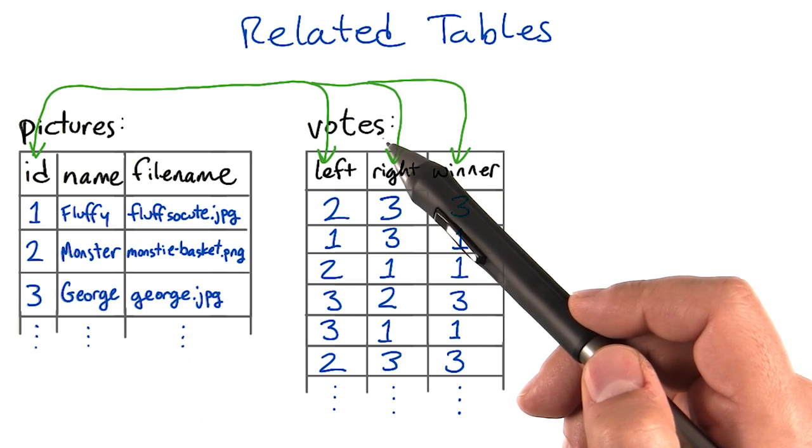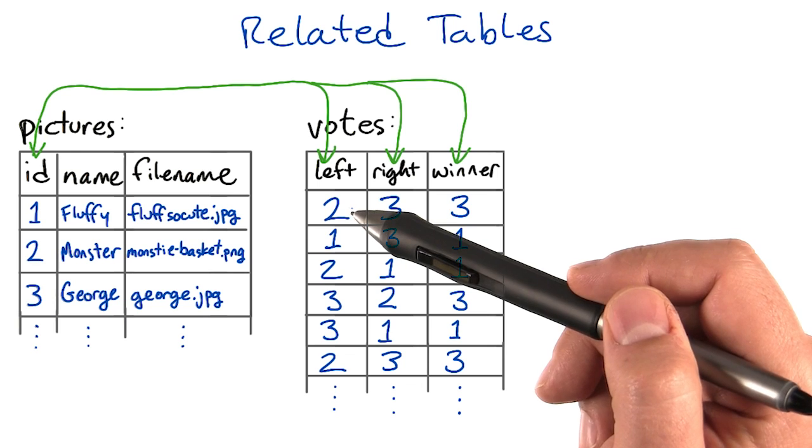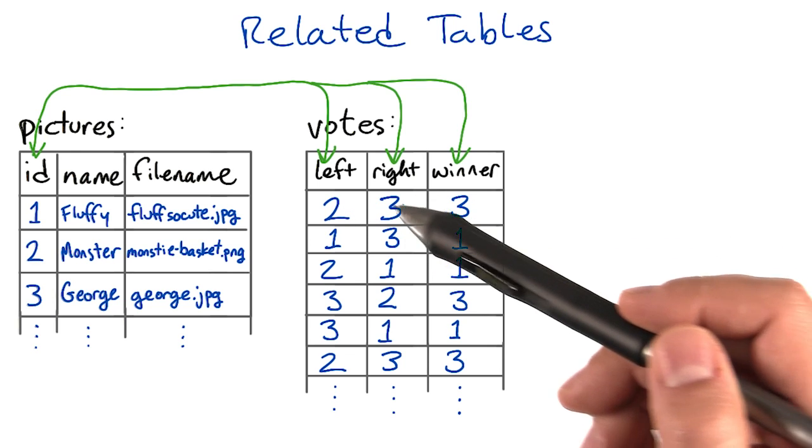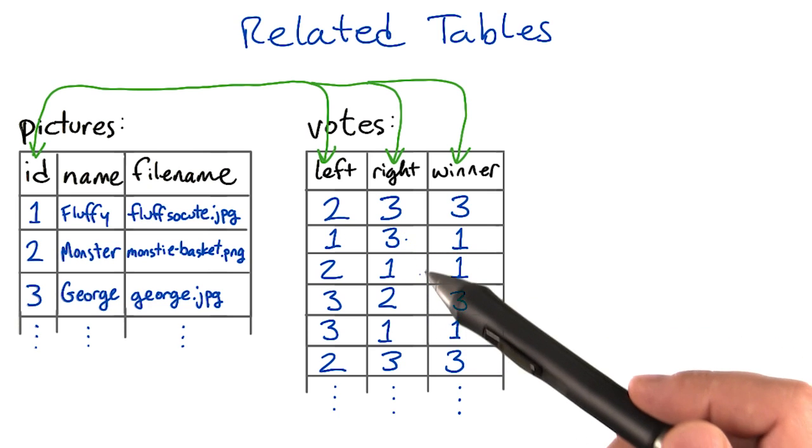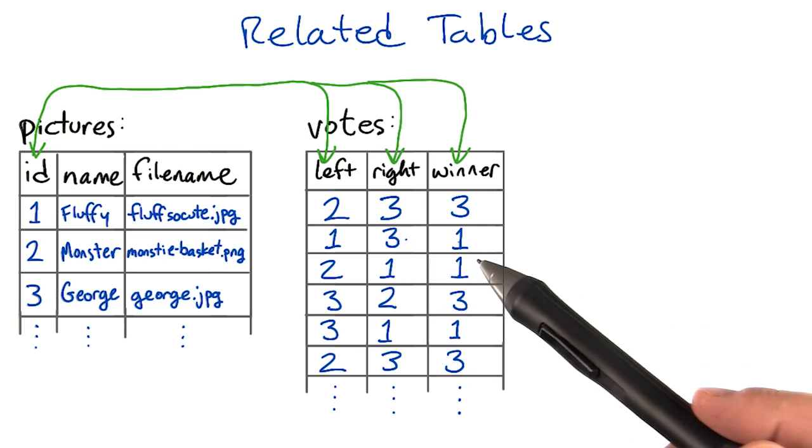In the votes table, the sentences are Picture 2 and Picture 3 were displayed, and the user voted for picture 3. Picture 1 and picture 3 were displayed, and the user voted for picture 1, and so on.